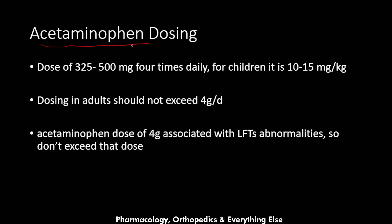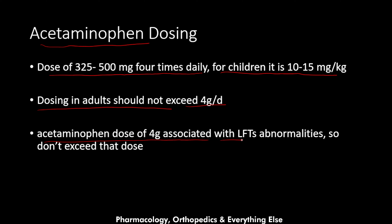Finally, regarding acetaminophen dosing: the effective dose is 325 to 500 mg four times daily for adults, and 10 to 15 mg/kg for children, effective for treatment of pain and fever. Dosing in adults should not exceed 4 grams per day, as an acetaminophen dose of 4 grams is associated with liver function testing abnormalities, so it is better not to exceed that dose.